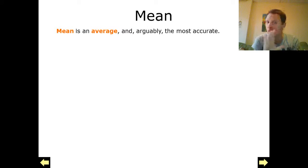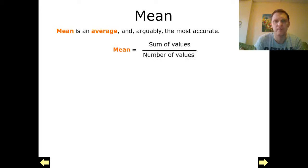It's the one that people use more than anything else because it gives the best idea of the average. So to calculate the mean we use this calculation right here. We've got the sum of the values, so adding up all of our values, divided by the number of values, so how many values we've got that we added together.